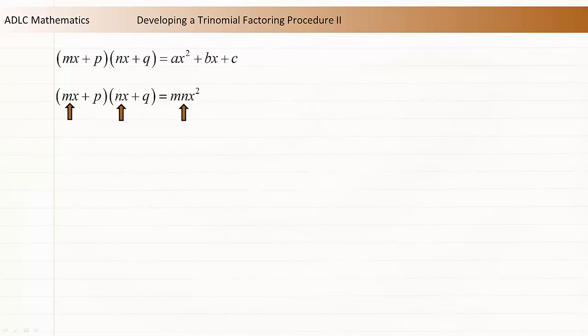mx times nx equals mnx squared. mx times q is equal to mqx. p times nx equals npx. p times q equals pq.